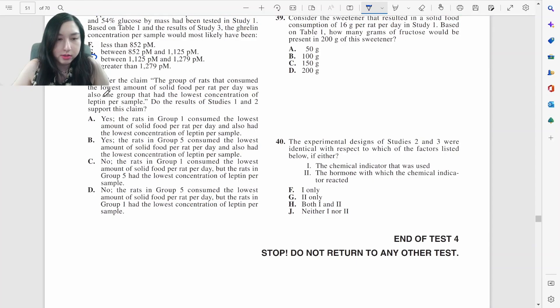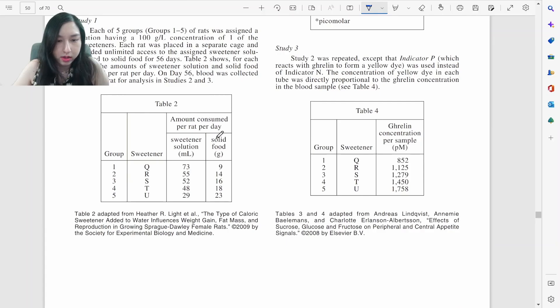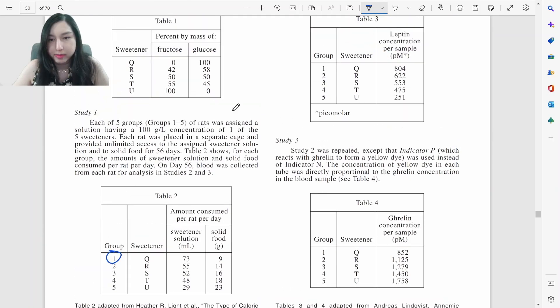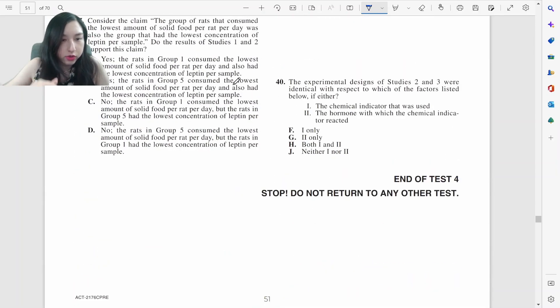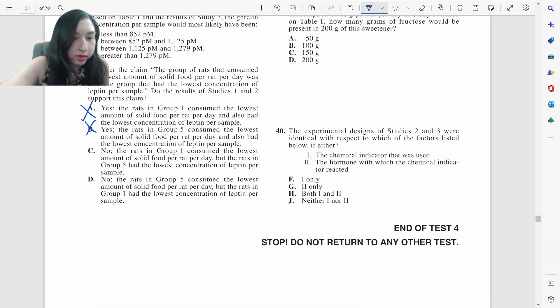Consider this claim. The group of rats that consume the lowest amount of solid food. Who consumed the lowest solid food? Right here. Group one. Nine. Also has the lowest concentration of leptin. Got to make sure I don't mess up. So leptin right here. Lowest concentration of leptin. One. Well, obviously group one does not have the lowest leptin. So not true. No, because group one consumed the lowest amount of solid food, but rats in group five had the lowest. Group five. Let me just double check. Group five. Yes. Group five is the lowest. It's going to be C.